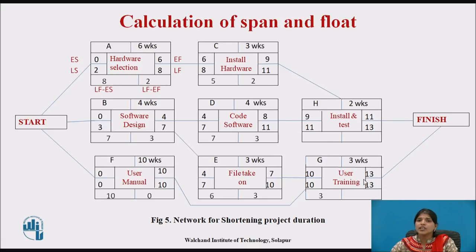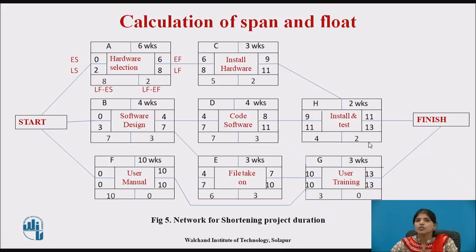For activity G: span is 13 minus 10 giving 3, and float is 13 minus 13 giving 0. For H: 13 minus 9 gives 4, and 13 minus 11 gives float 2. In this way, you calculate the activity span and float for each activity.